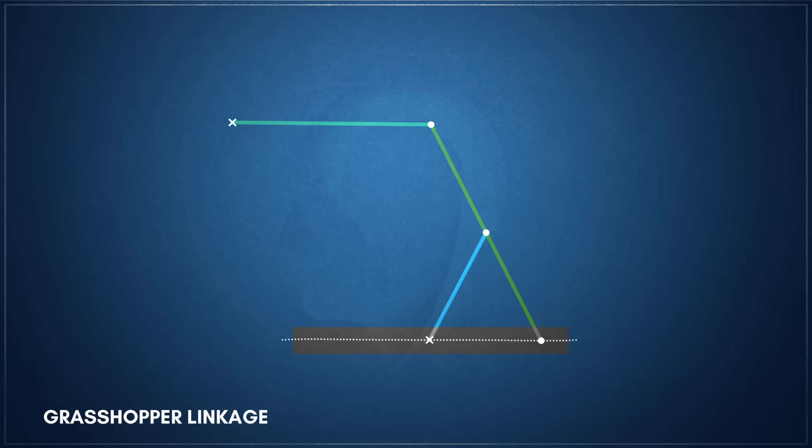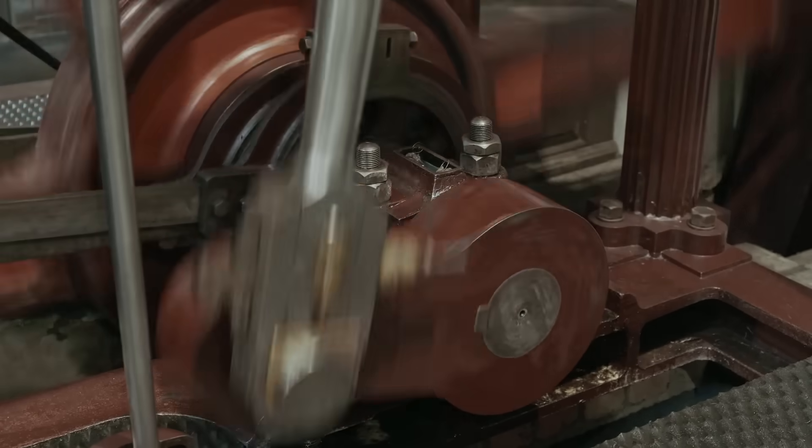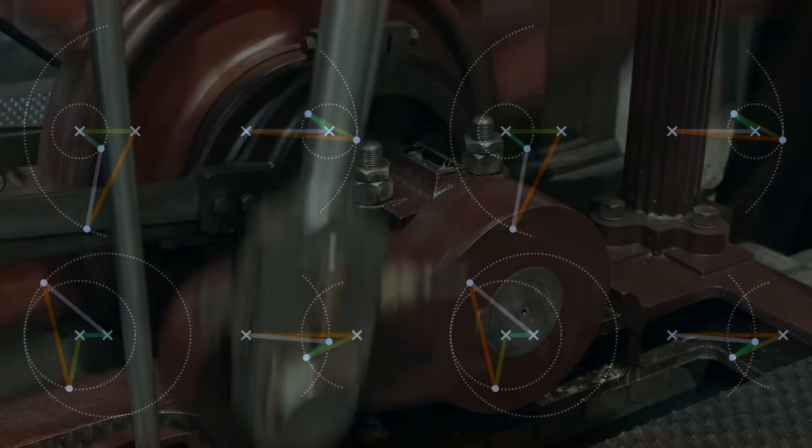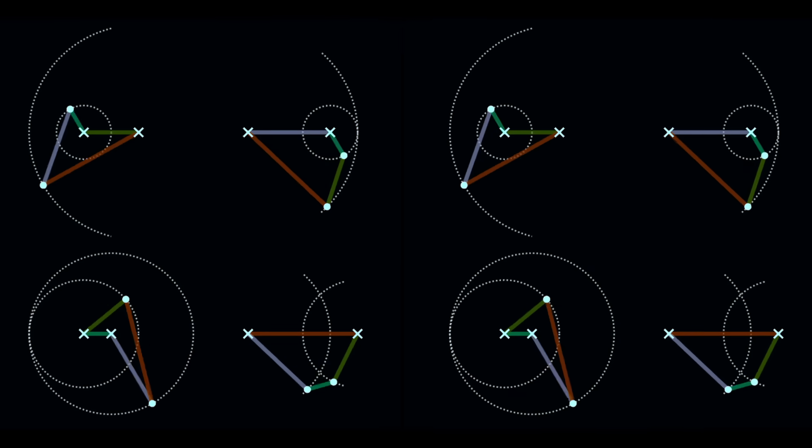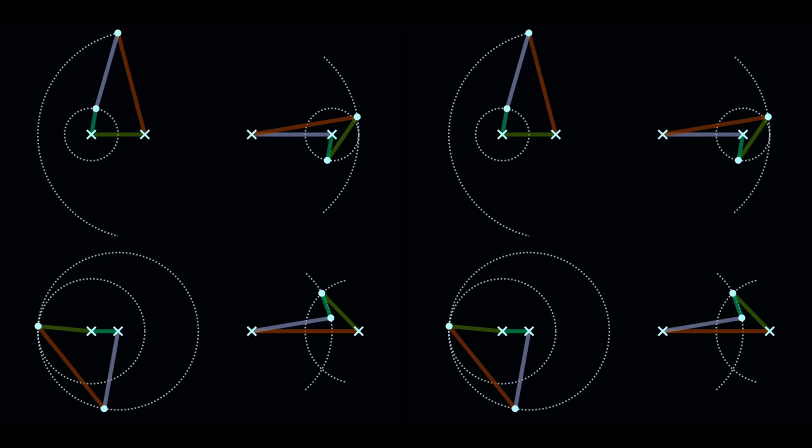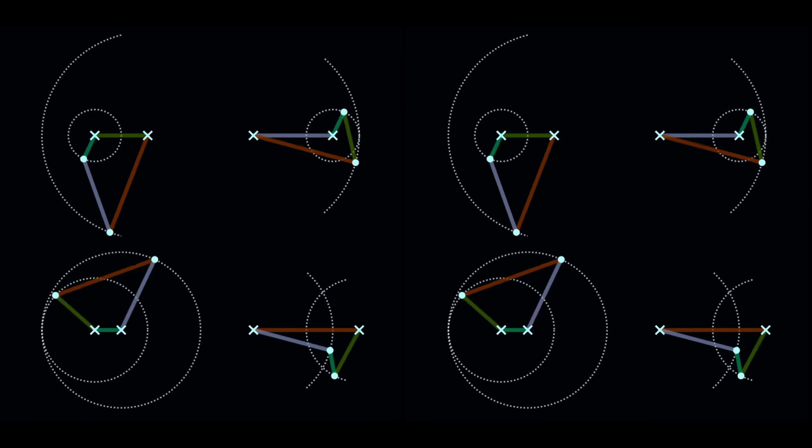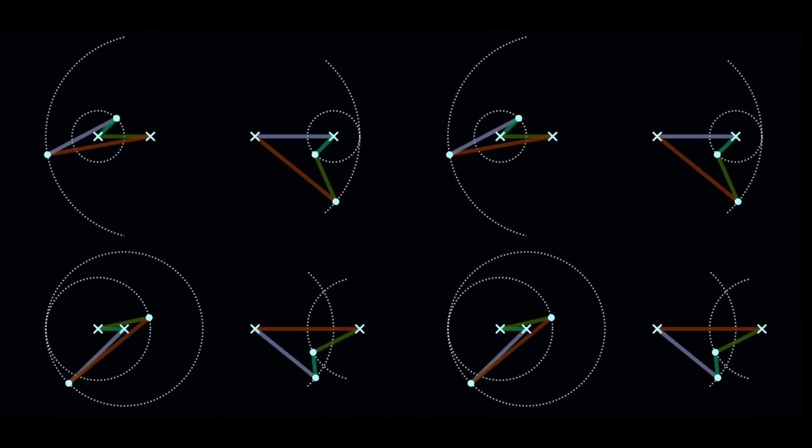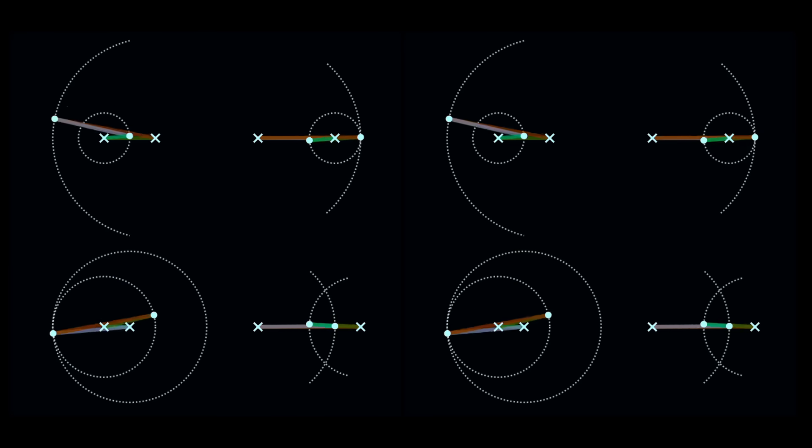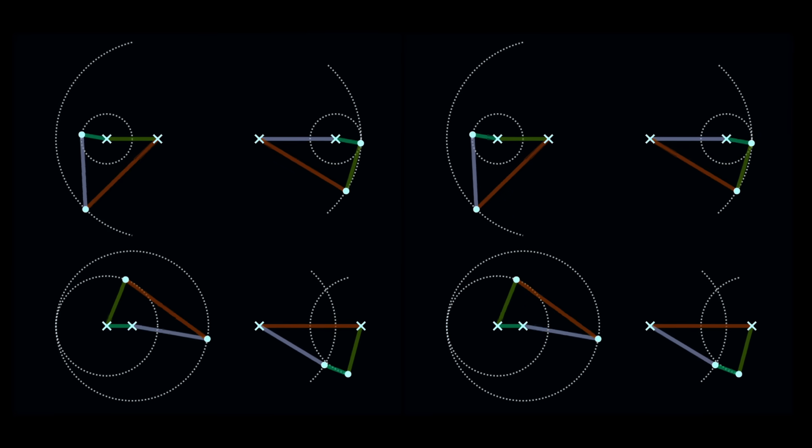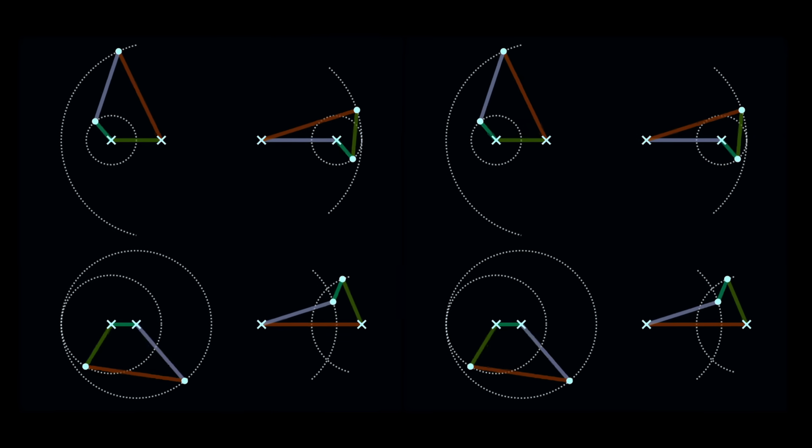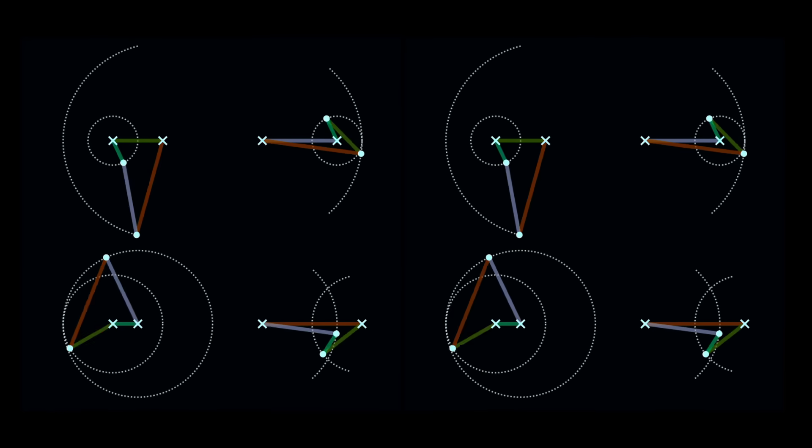For decades after Watt's patent, the search for a perfect straight line mechanism continued. The various four-bar linkages, while clever, were all fundamentally limited. It was eventually understood as a core tenet of kinematics that it is impossible to generate a perfectly straight line using a four-bar linkage composed solely of revolute joints. Achieving a true straight line would require a more complex arrangement of links or a leap into another dimension.